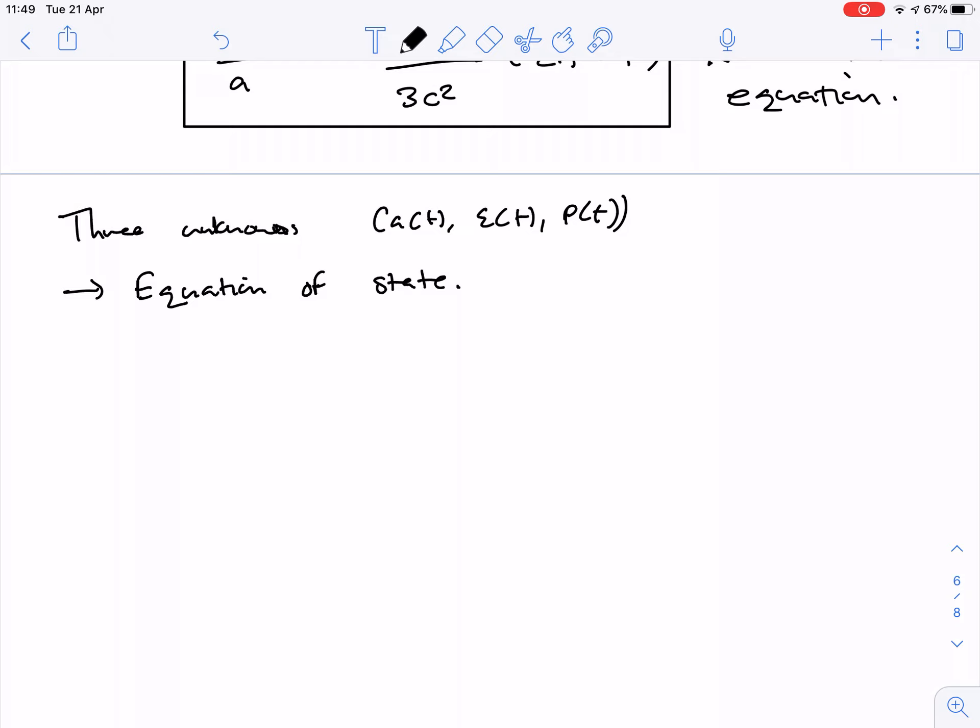And an equation of state links the pressure with the energy density. And in cosmology, we do a simple version. In cosmology, we make a very simple statement. We say p equals w e. And so this is the equation of state parameter. And it's just a number, ultimately.